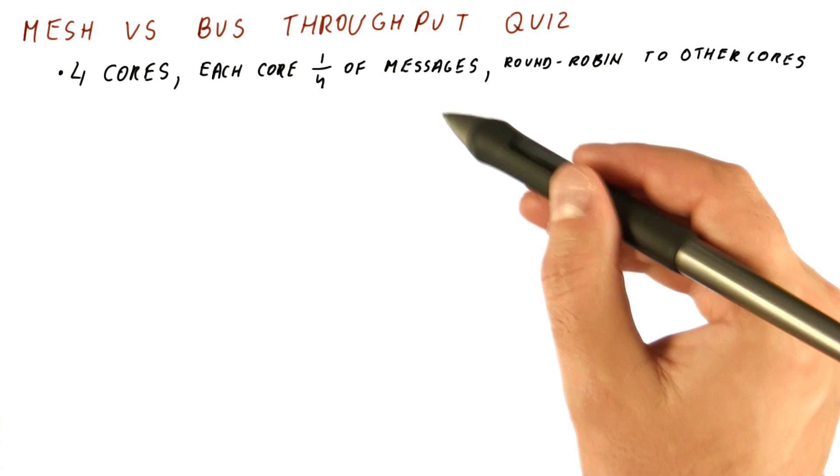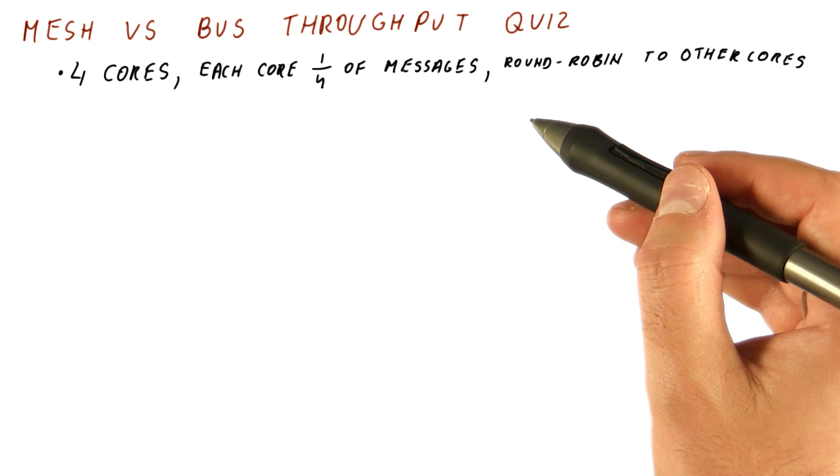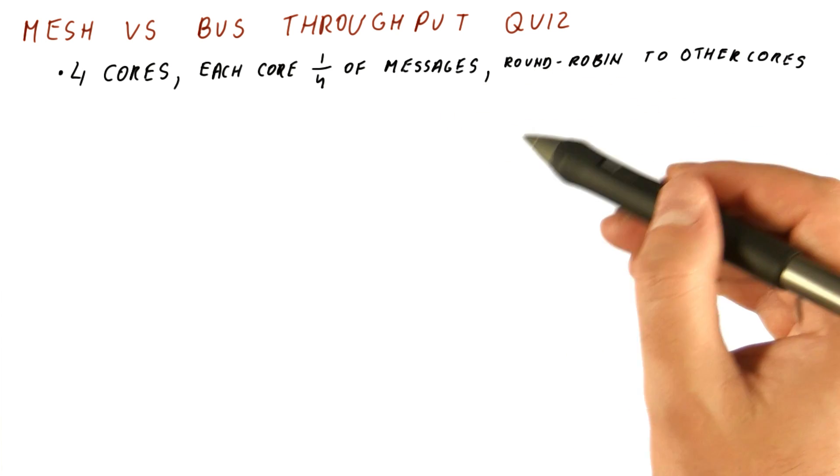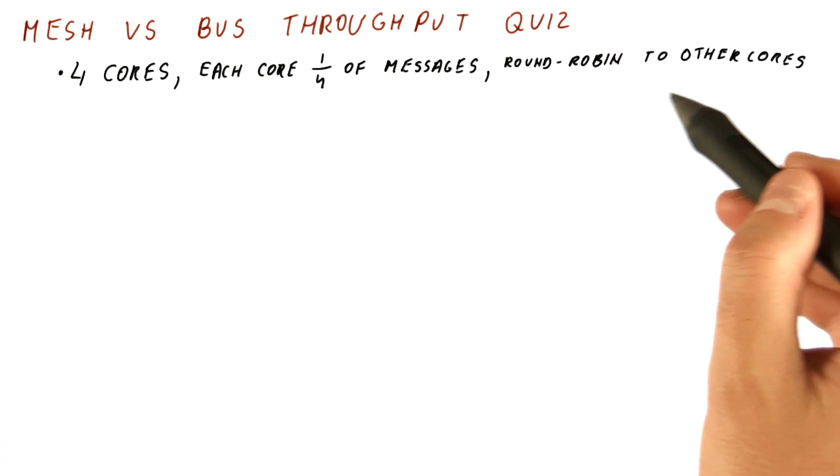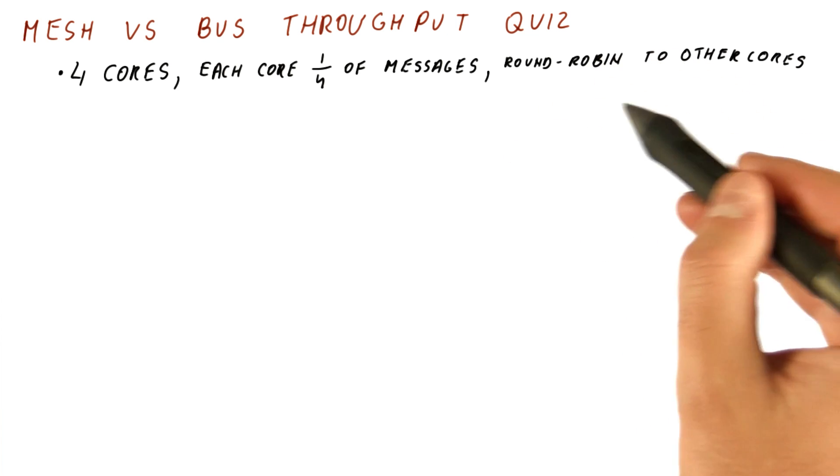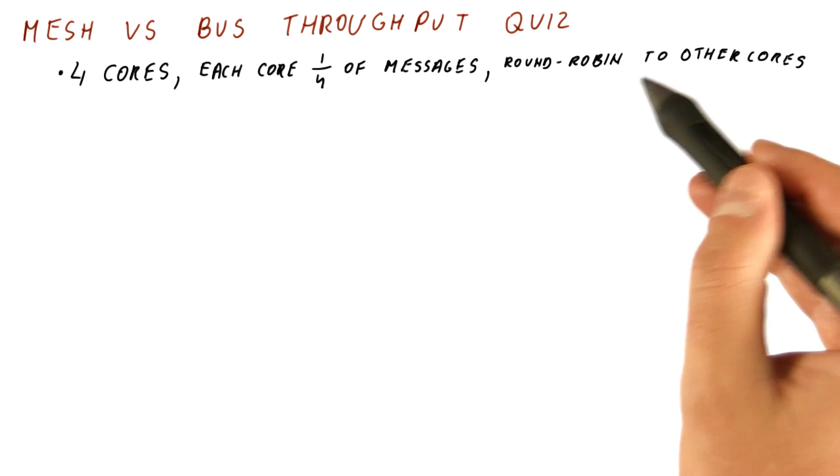And you can assume that this is totally randomly distributed so that we don't necessarily get any synchronicity among these accesses. Pretty much just like a third of the traffic sent by each core goes to each of the other cores, but you can assume that it happens willy nilly.